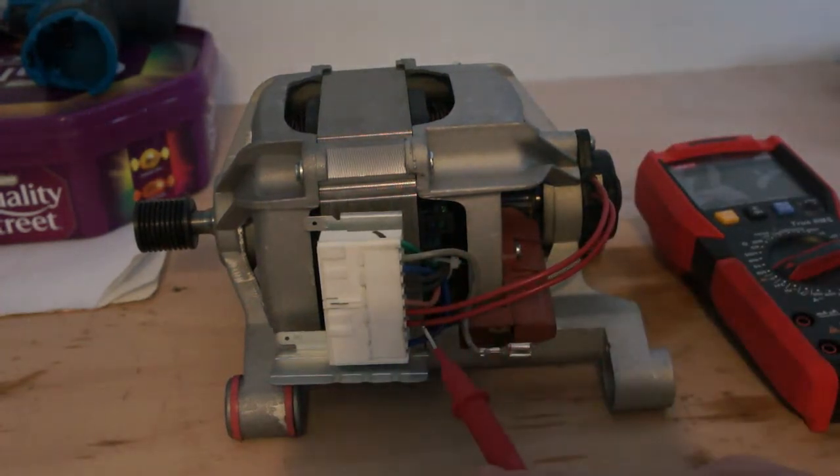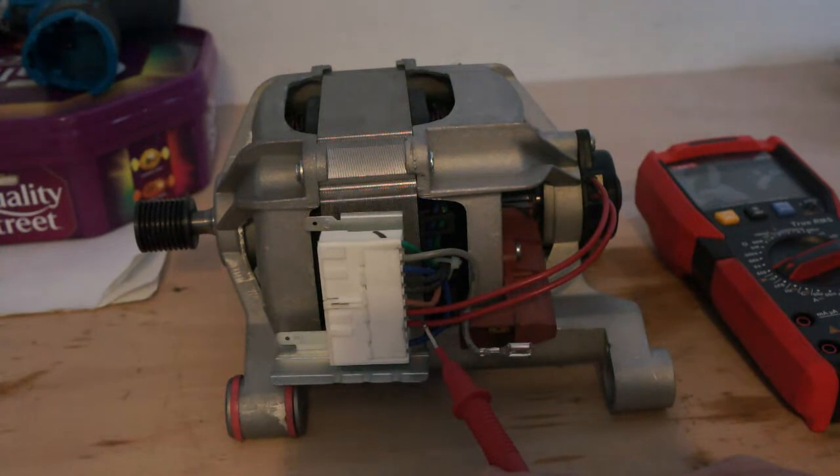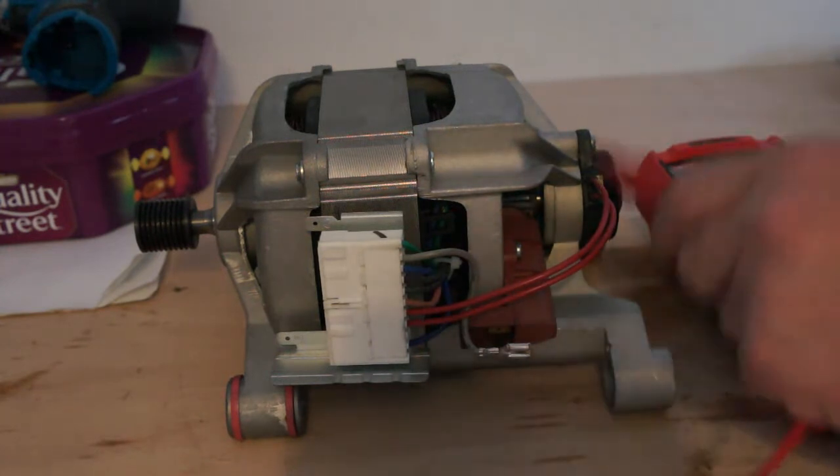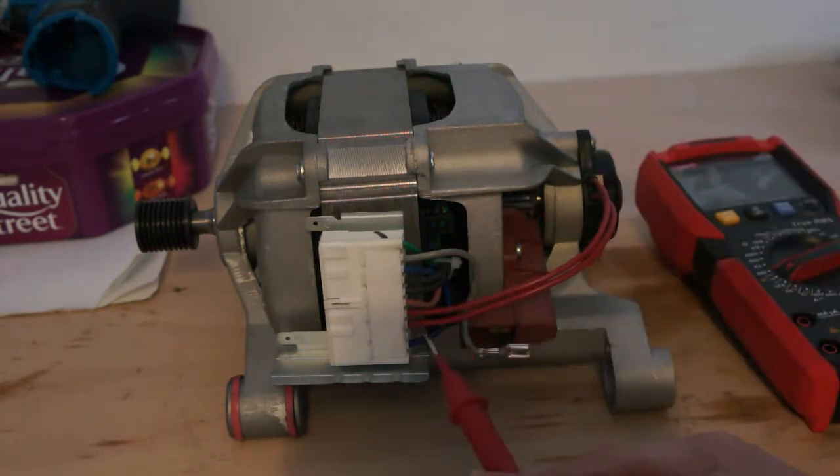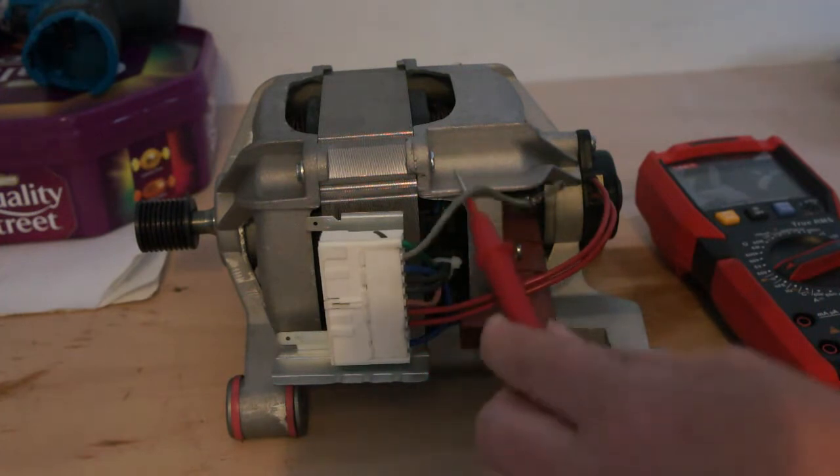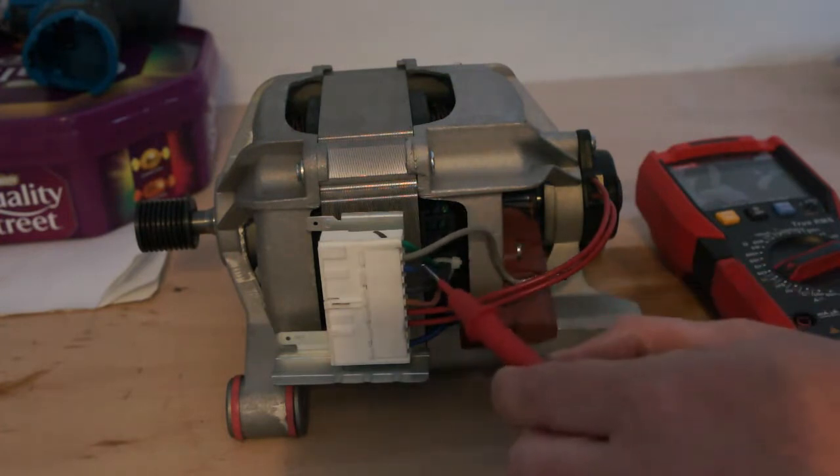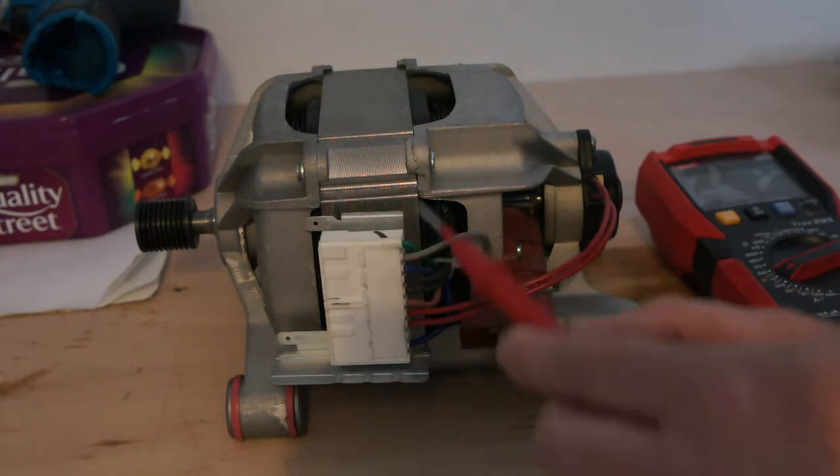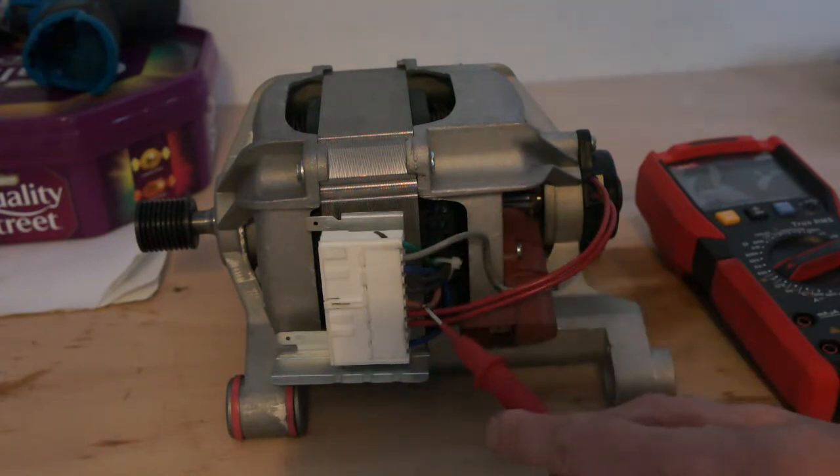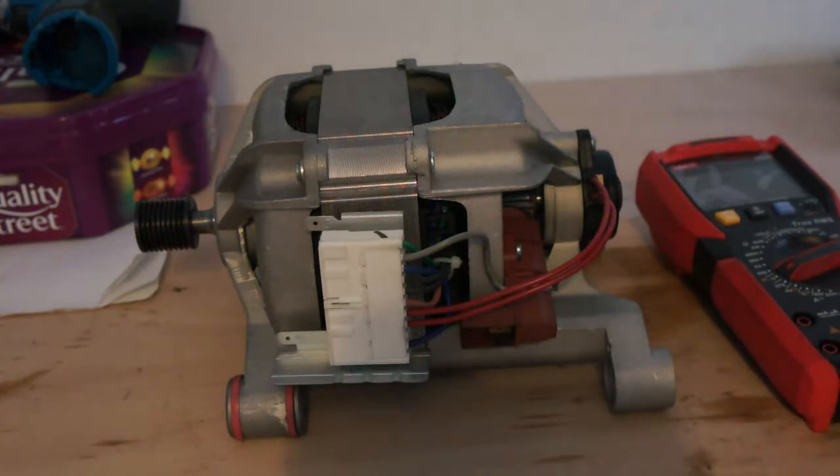So we've got the rotor speed sensor, you've got that one's one of the brushes and this one is the other brush so those two are together. I think the brown colored one and this blue are the stator windings.